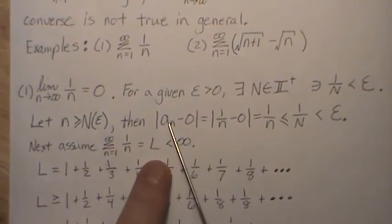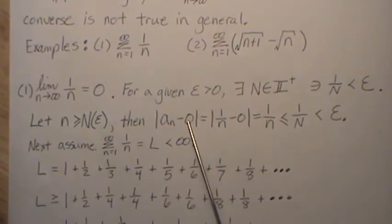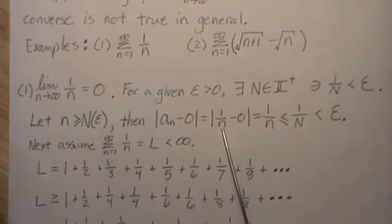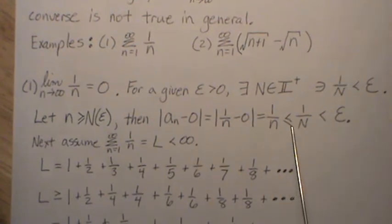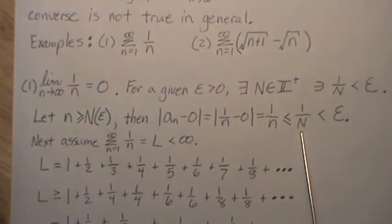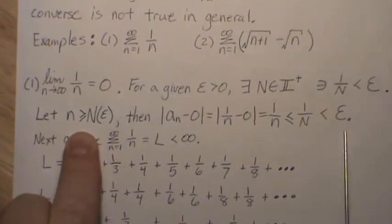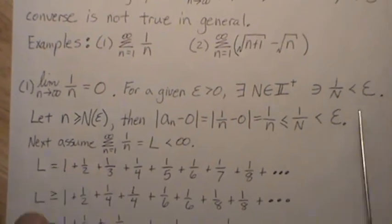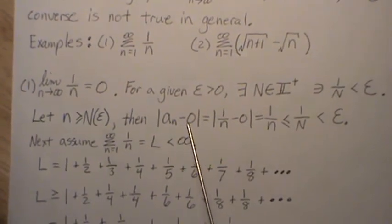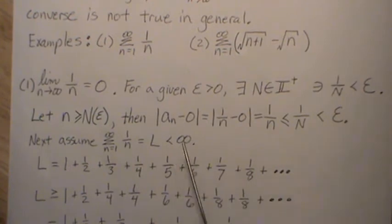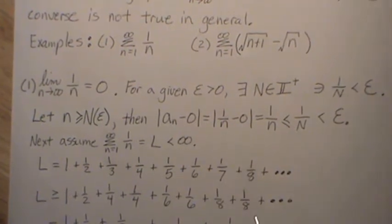Then the absolute value of a_n minus what we think the limit is, which is zero, is one over n minus zero, which is really just one over n, which is less than one over capital N the way we've defined it, and that's less than epsilon. So for whatever epsilon we pick, these values can be arbitrarily small. That says that a_n, or one over n, limits to zero.